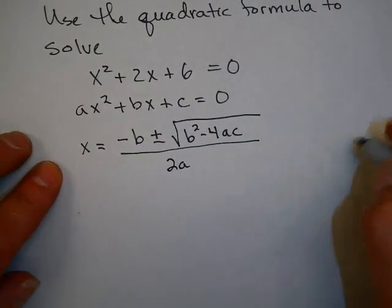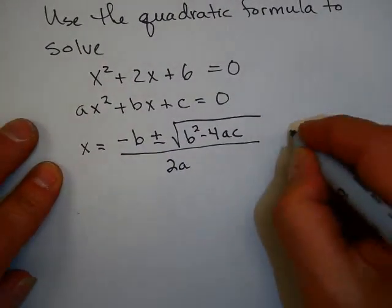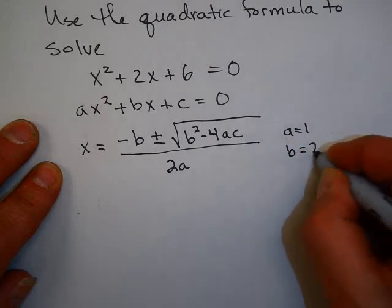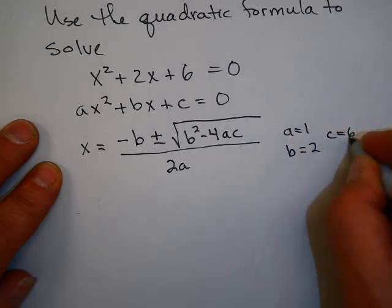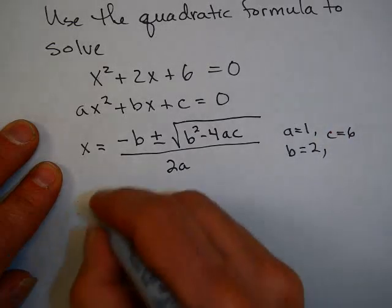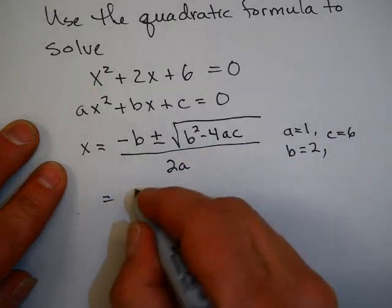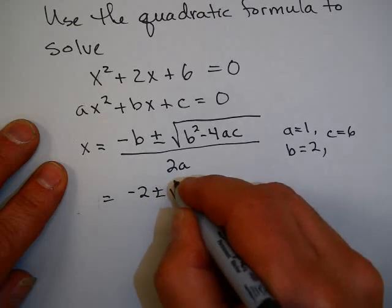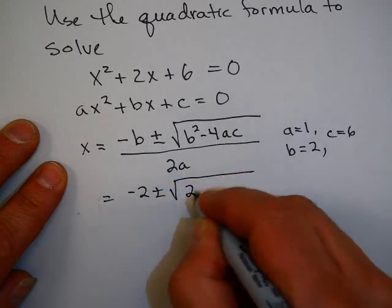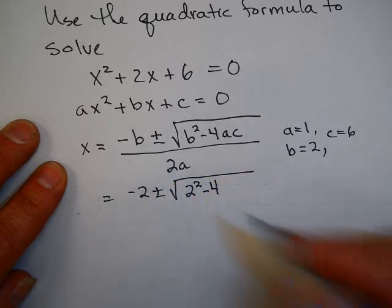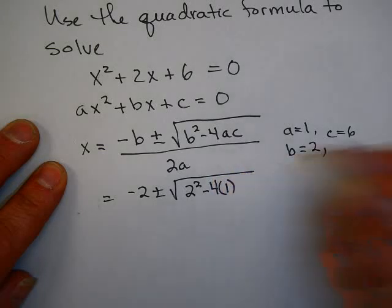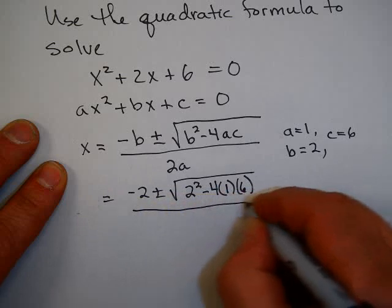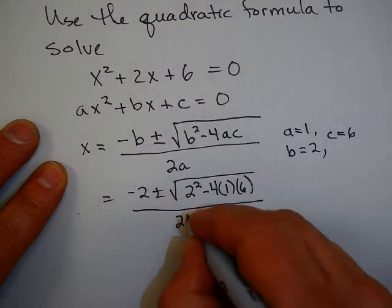In this case, a is equal to 1, b is equal to 2, and c is equal to 6. So let's plug those in: (−2 ± √(2²− 4·1·6)) / (2·1).